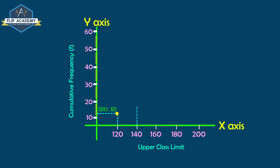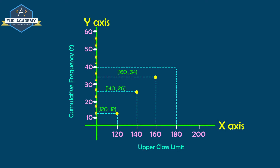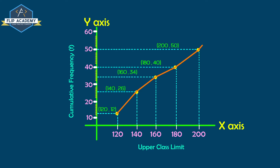Plotting the remaining points: (140, 26), (160, 34), (180, 40), and (200, 50). Joining all these points gives the ogive for the less than type cumulative frequency table. Question number 1 is complete.